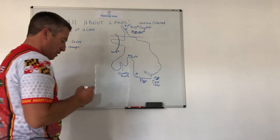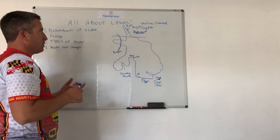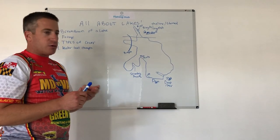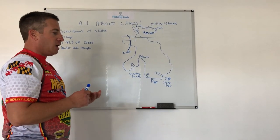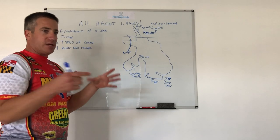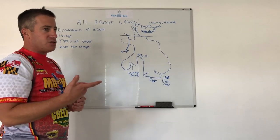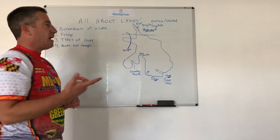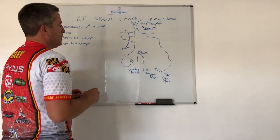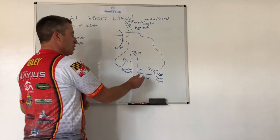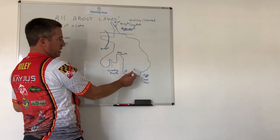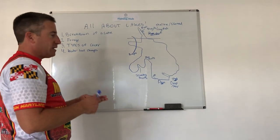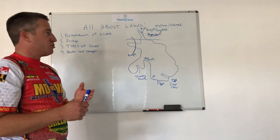Baits that work really well when the water is up include chatterbaits, squarebill crankbaits, and flipping and pitching once you locate the fish. To find the fish first, I generally power fish down in the lower lake section. When the water is down, it's jerkbaits, flutter spoons, Carolina rigs, and drop shots.